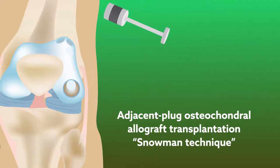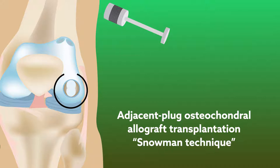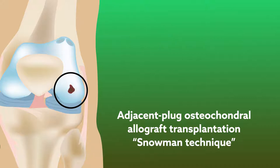The first method utilized adjacent plug osteochondral allograft transplantation, also known as the SNOWMAN technique, or SNOWMAN OCA. This approach involves placement of adjacent overlapping allografts to treat irregular or ovoid lesions. All patients undergoing this procedure were being treated for a single osteochondral lesion of the femoral condyle.